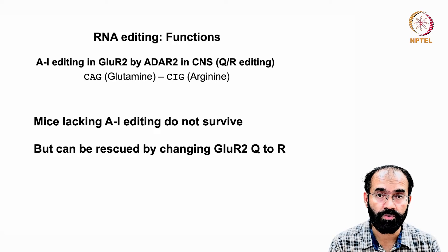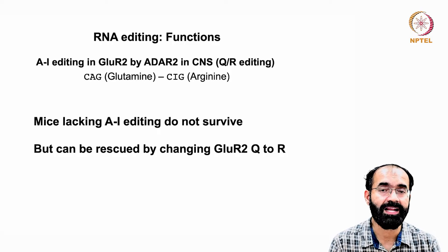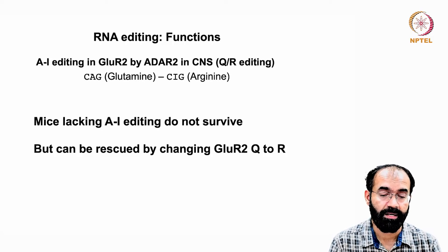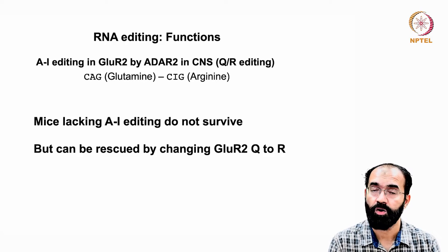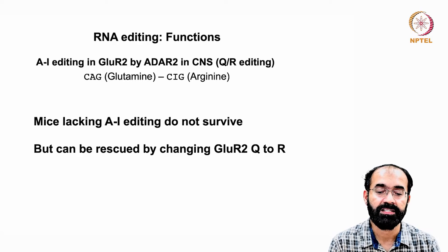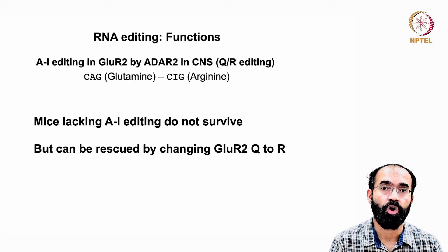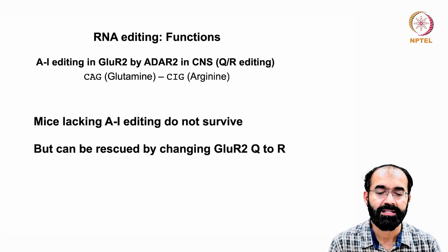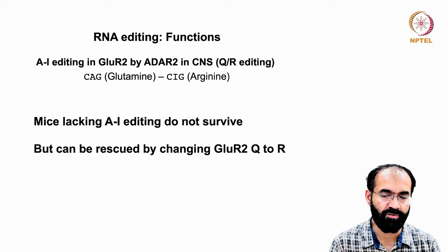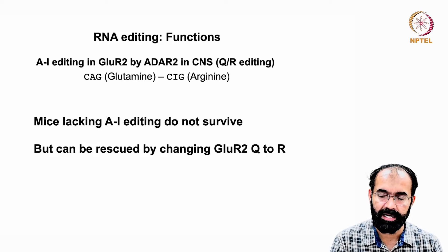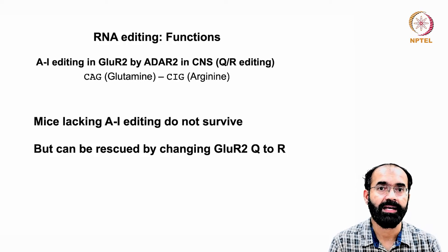In the rescue experiment, the gene GluR2 Q-to-R is artificially mutated so the organism no longer depends on ADAR2 for this editing. While ADAR2 may perform other functions that become compromised, none are as critical as the Q-to-R editing. The moment you complement the animal with the arginine-containing version of the GluR2 gene, the organism survives. This shows how life and death can hang on a single RNA editing event.